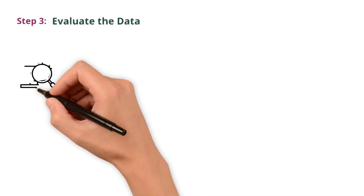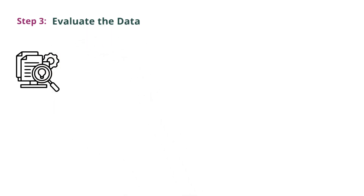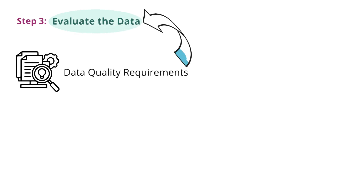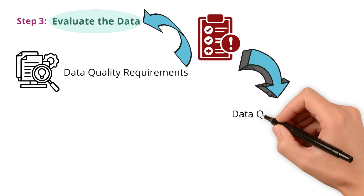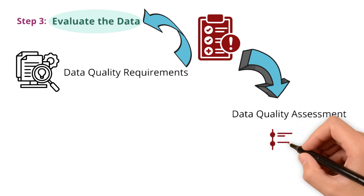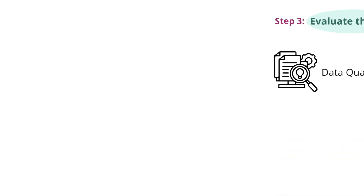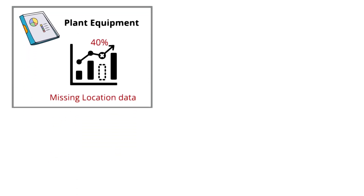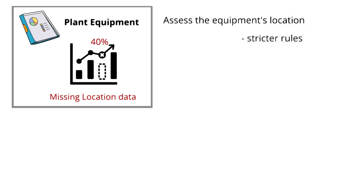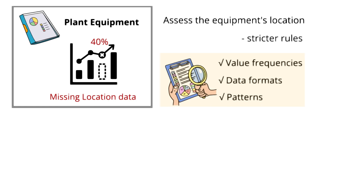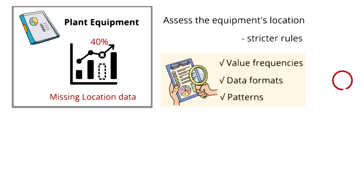Step 3: Evaluate the data. Now that we have done data discovery and set clear data quality requirements, it's time to evaluate the data based on these rules and document any successes or failures. This is the real data quality assessment where we test if the data meets the standards we set. Using our earlier example, we would now assess equipment's location using the stricter rules we defined. Profiling can help check patterns, formats, and values, but the goal here is to see whether each value passes or fails the expectations we set.